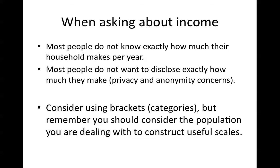When asking about income, most people don't know exactly how much they make per year as a household. And even if they did, the vast majority don't want to discuss it due to obvious privacy and anonymity concerns. So again, much like age, we recommend using brackets or categories — for example, less than $30,000; $30,000 to $50,000; $51,000 to $75,000; $76,000 to $100,000. These are meaningful brackets that are wide enough that respondents won't be overly concerned about privacy or judgment.